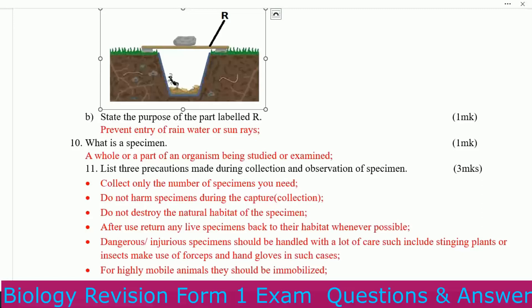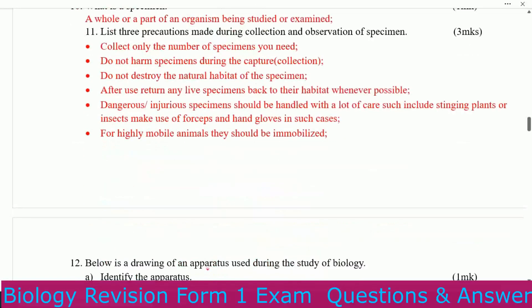List three precautions taken during the collection and observation of specimens. Number one: collect only the number of specimens you need. Number two: do not harm specimens during capture or collection. Number three: do not destroy the natural habitat of the specimen.